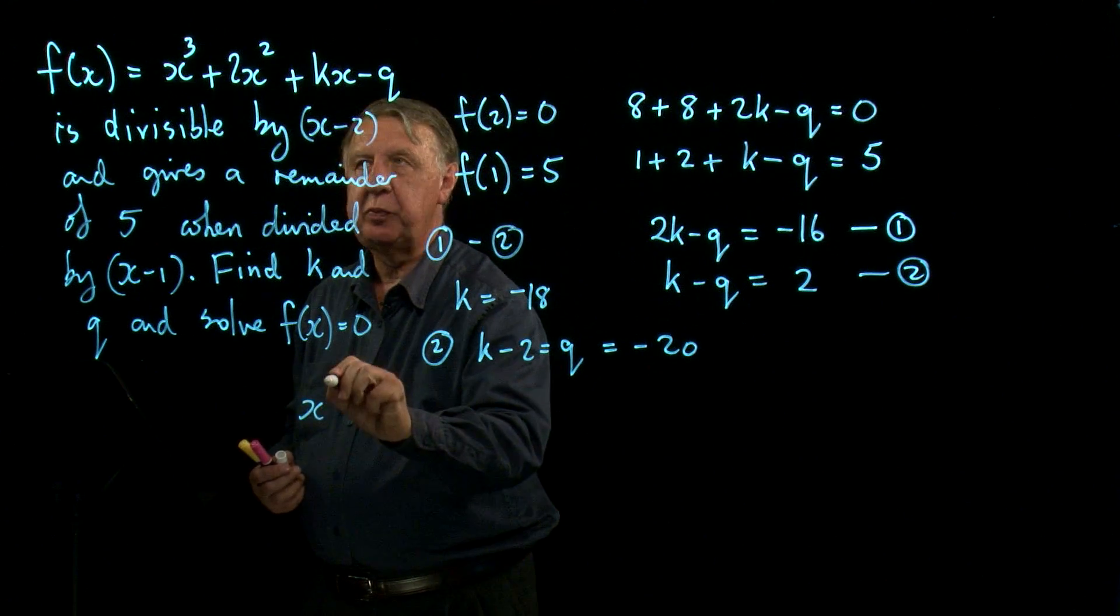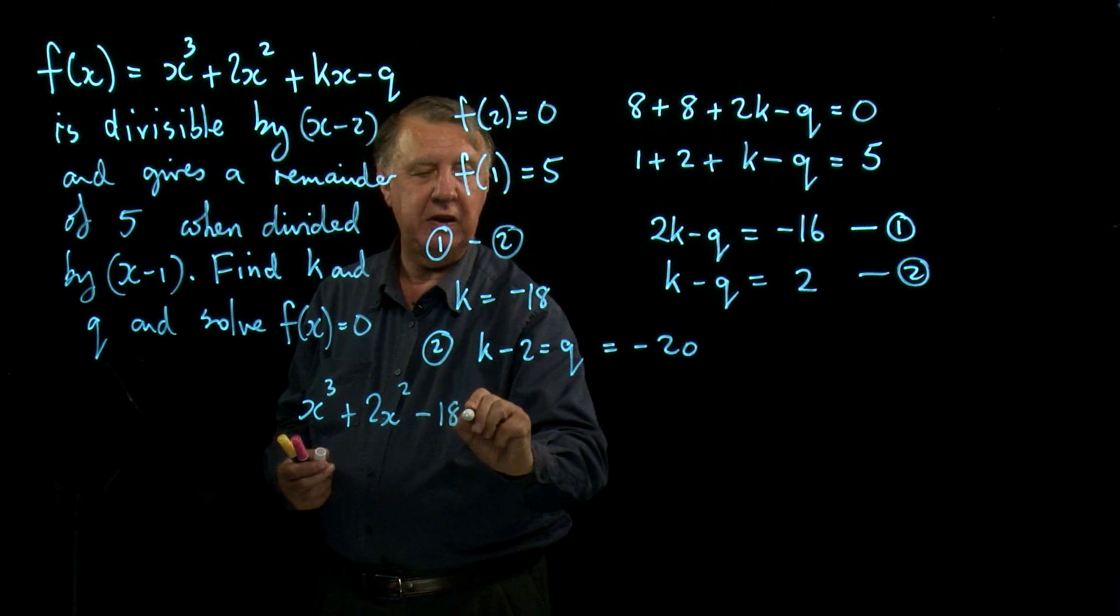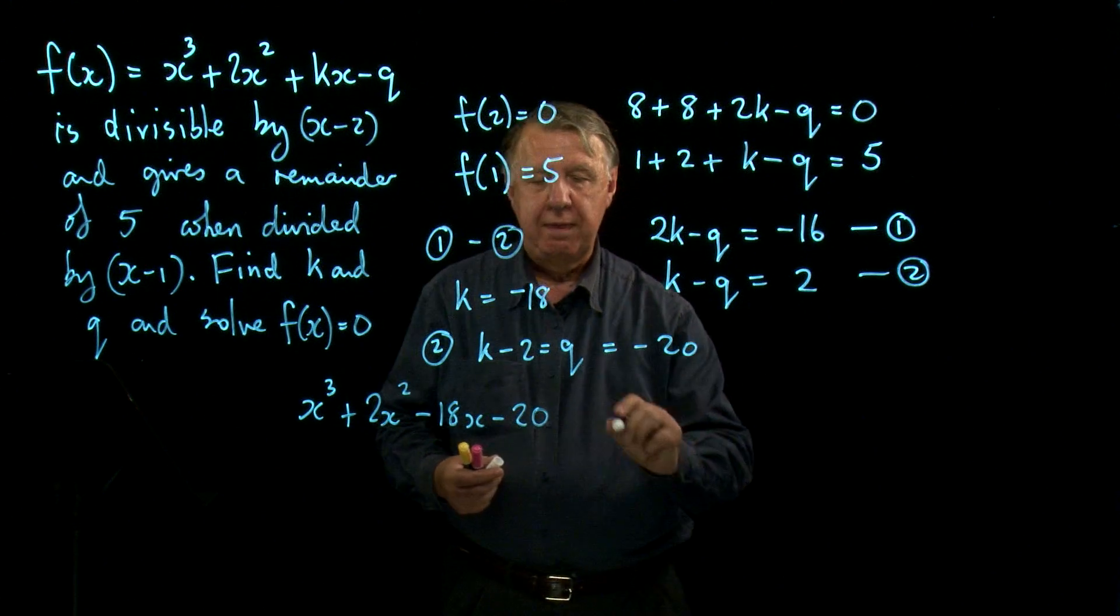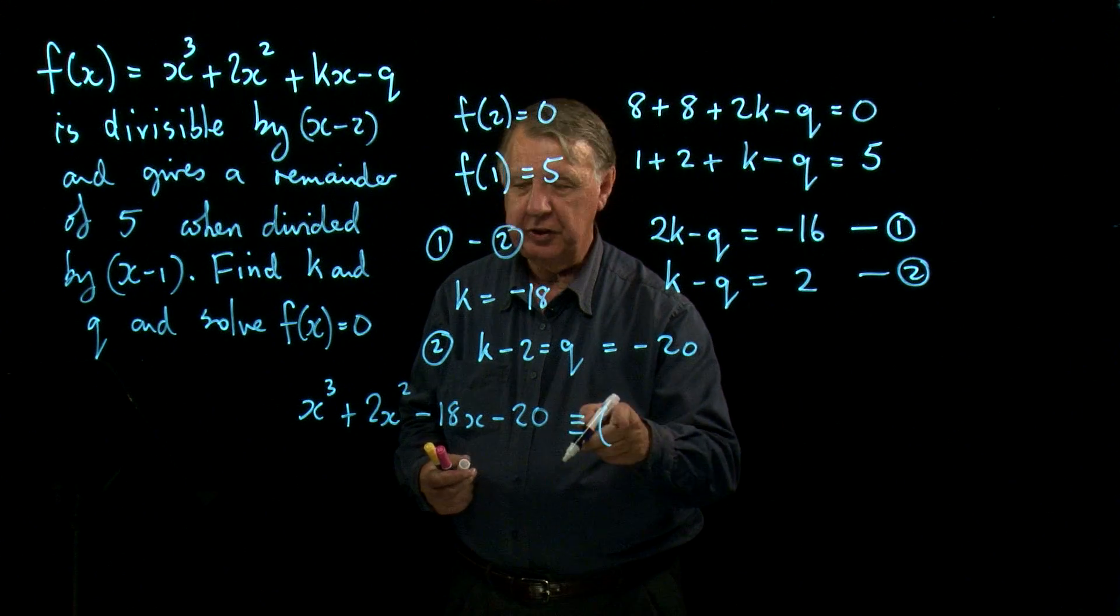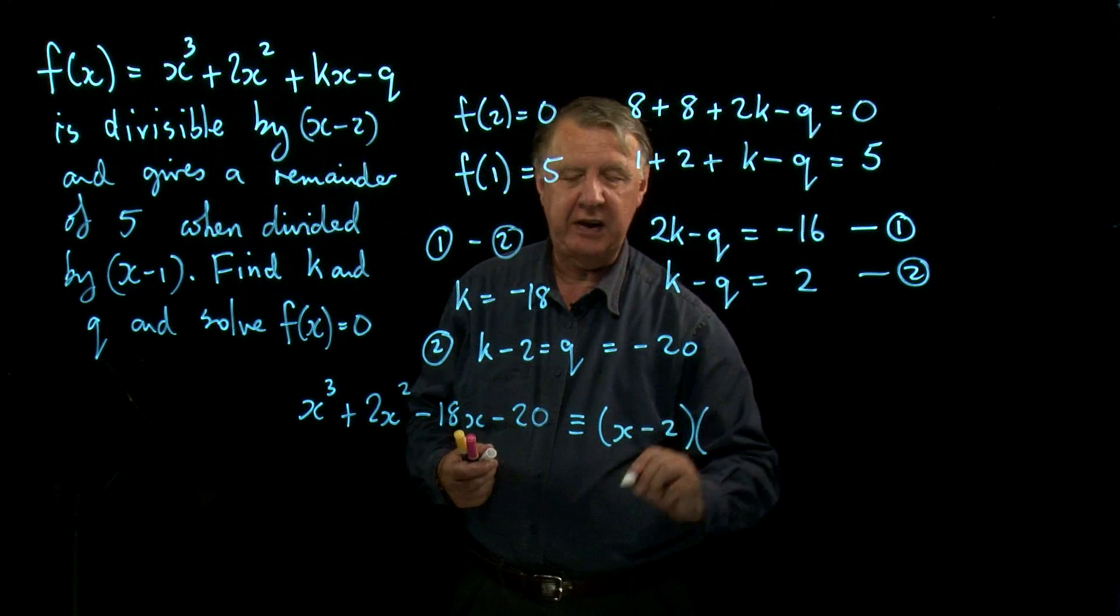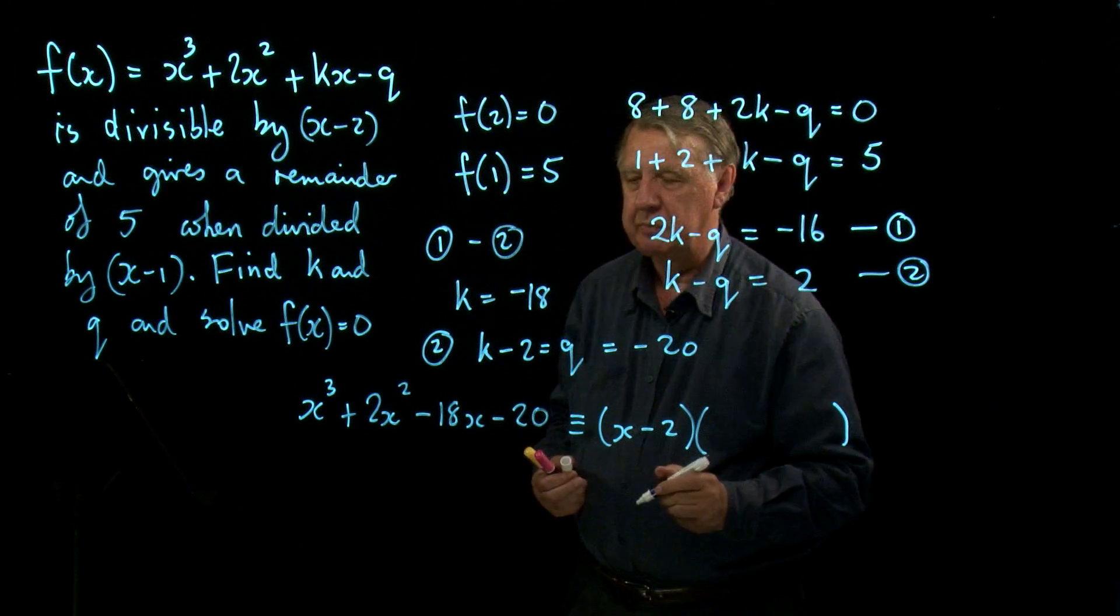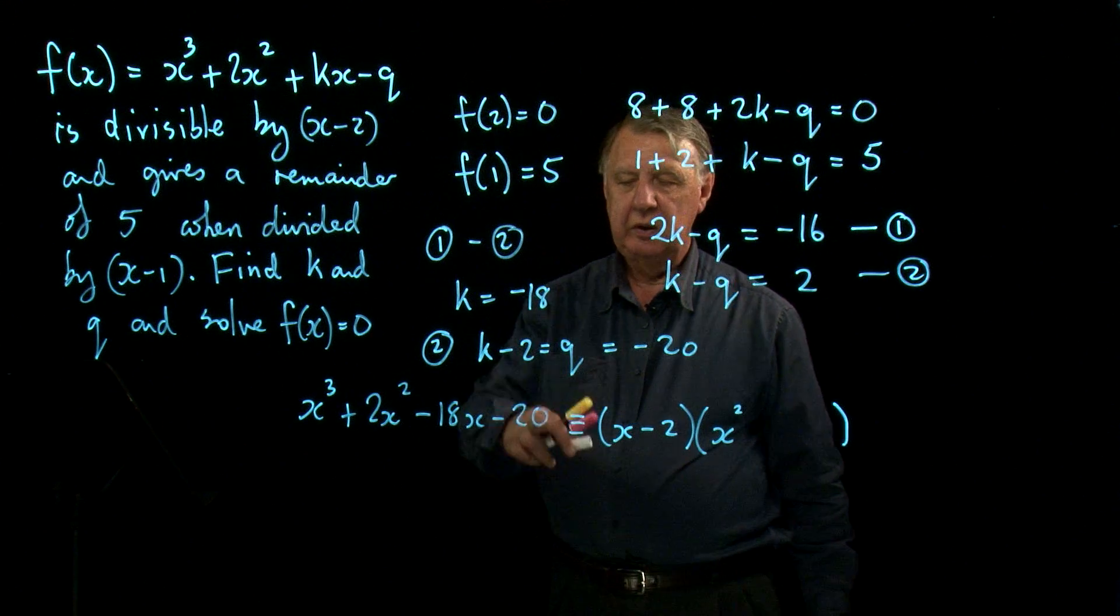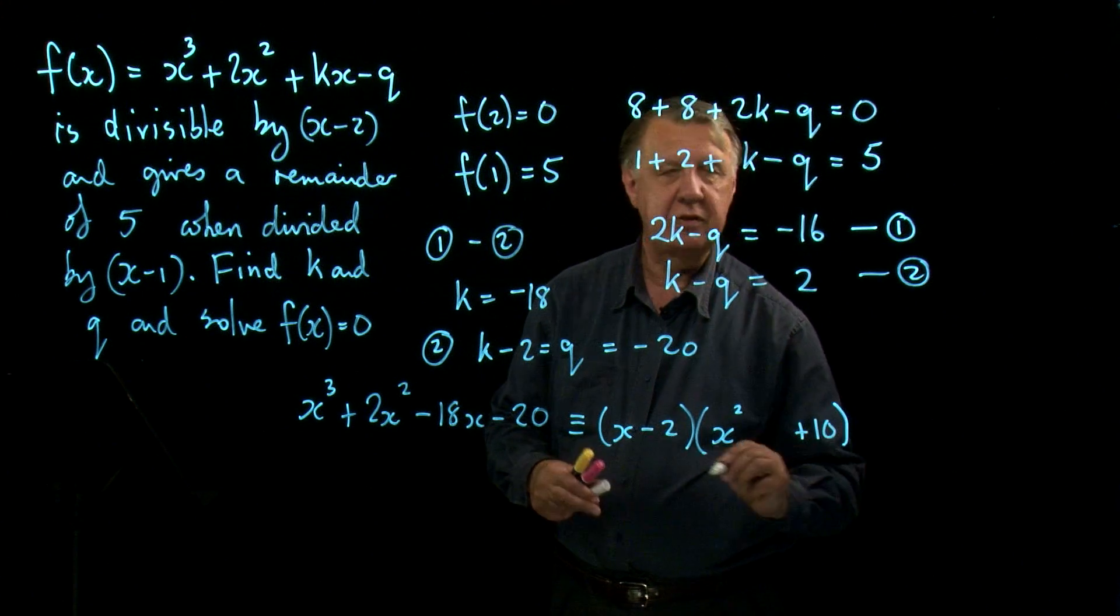So that means that my cubic is x cubed plus 2x squared minus 18x minus 20. We know, let's be proper, we'll put the three lines here. We know that x minus 2 is a factor. We don't really want to do long division so we can avoid it. That must be x squared in order to give me x cubed. Negative 20 means negative 2 times plus 10.